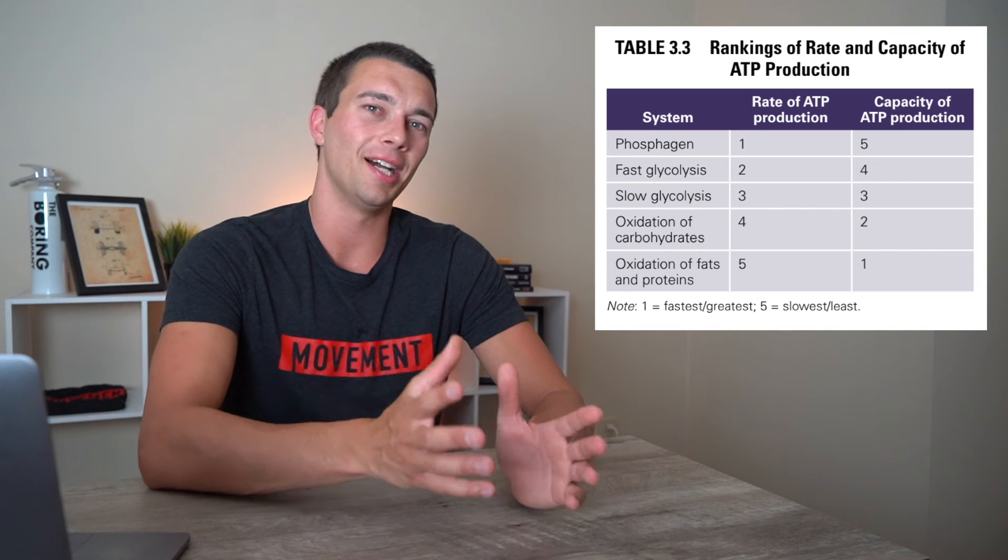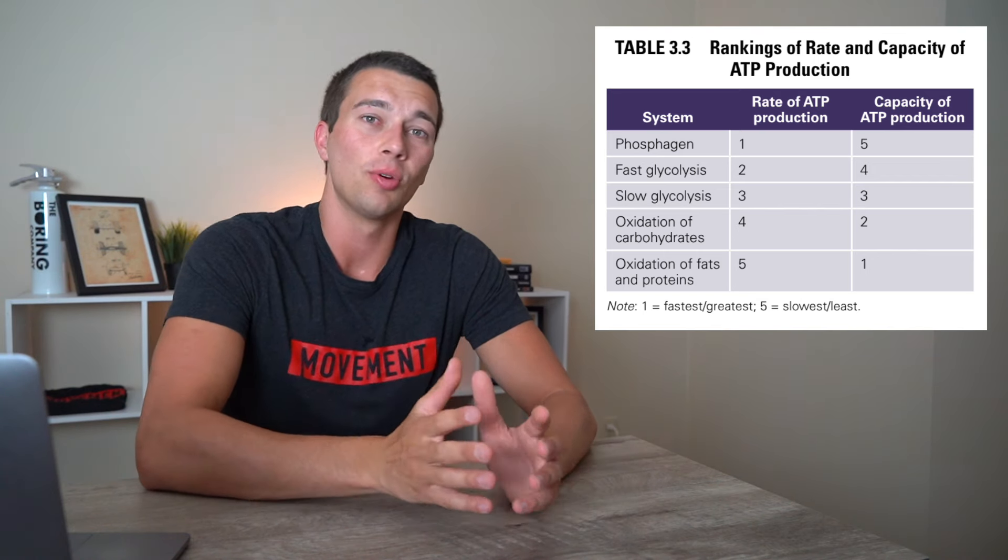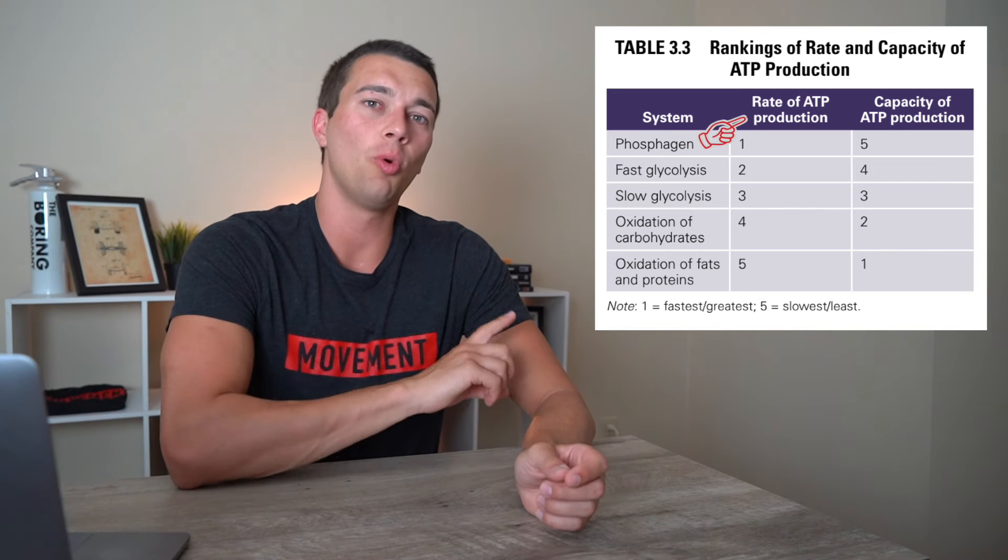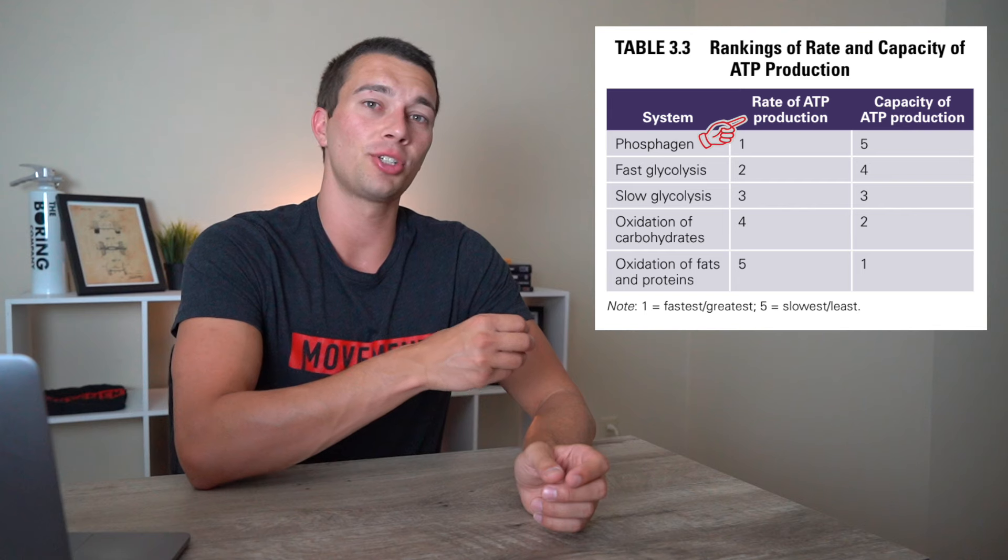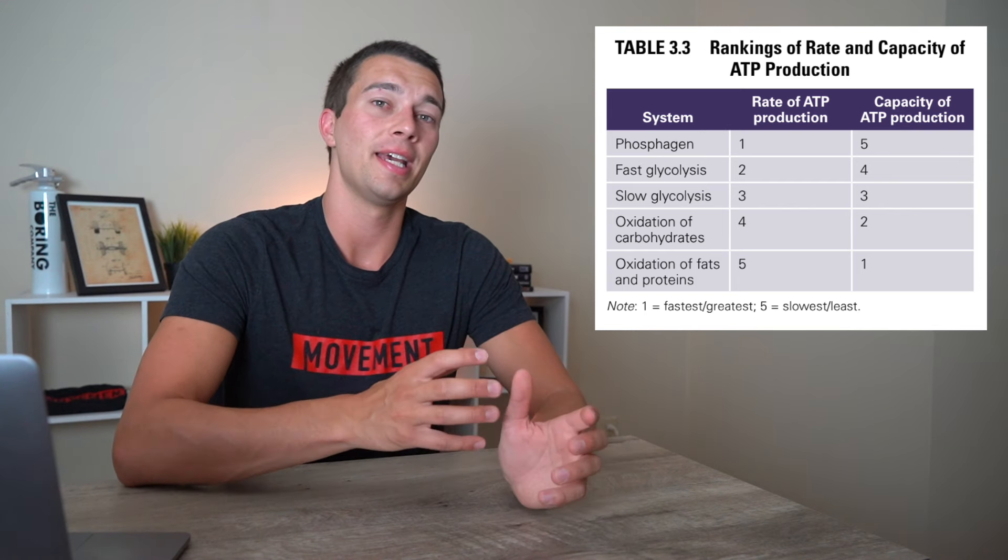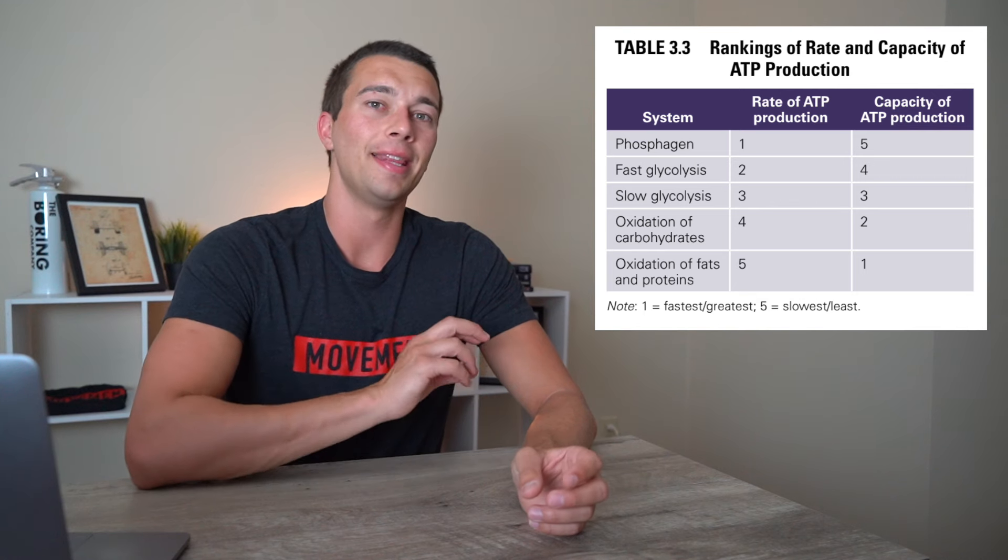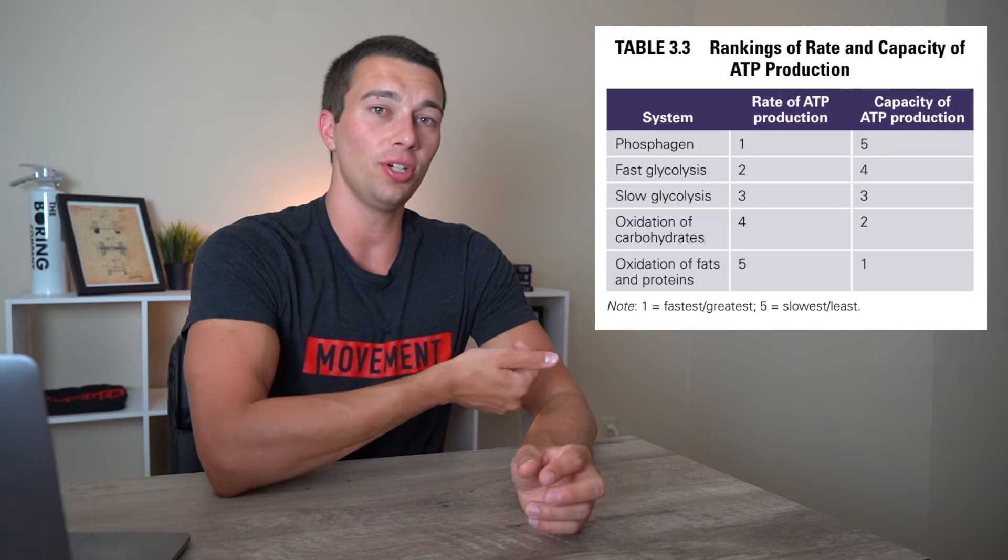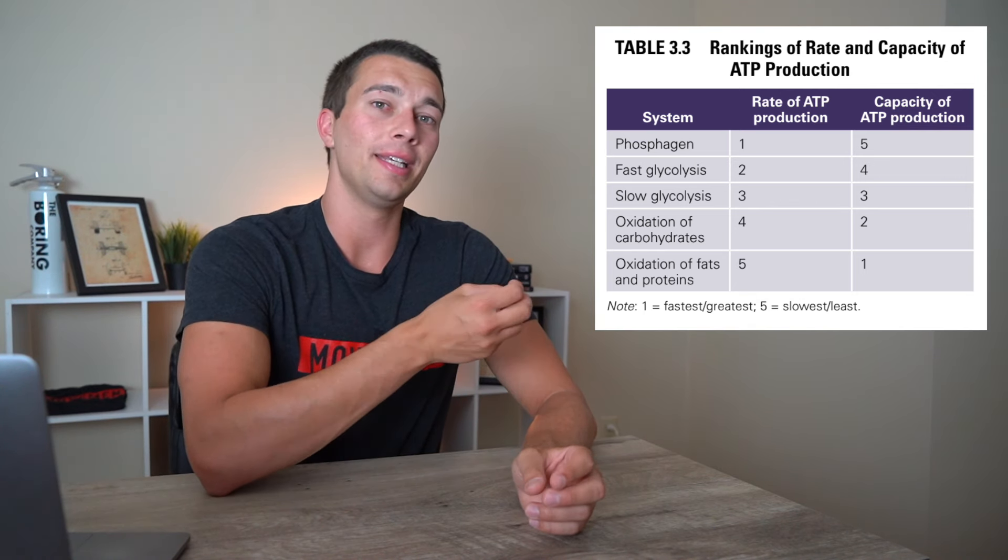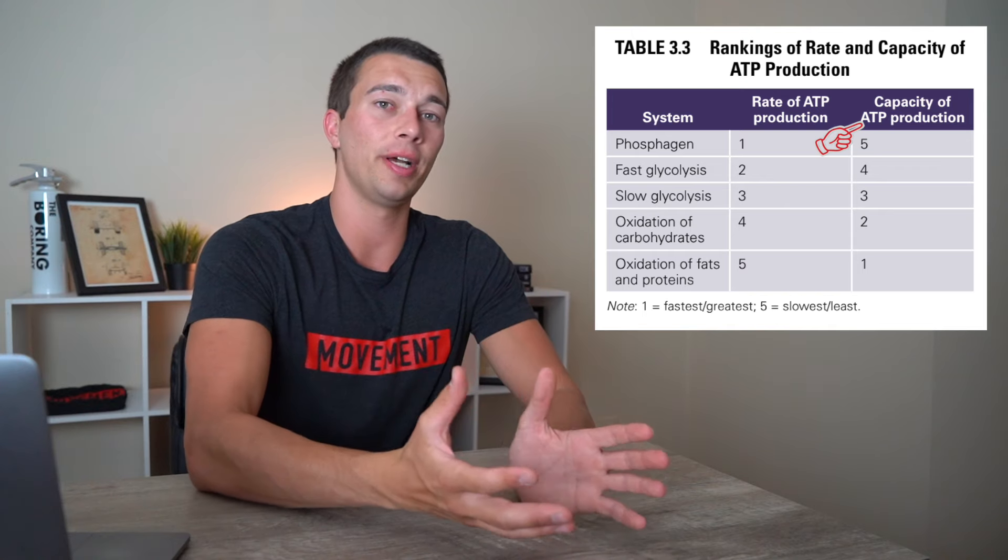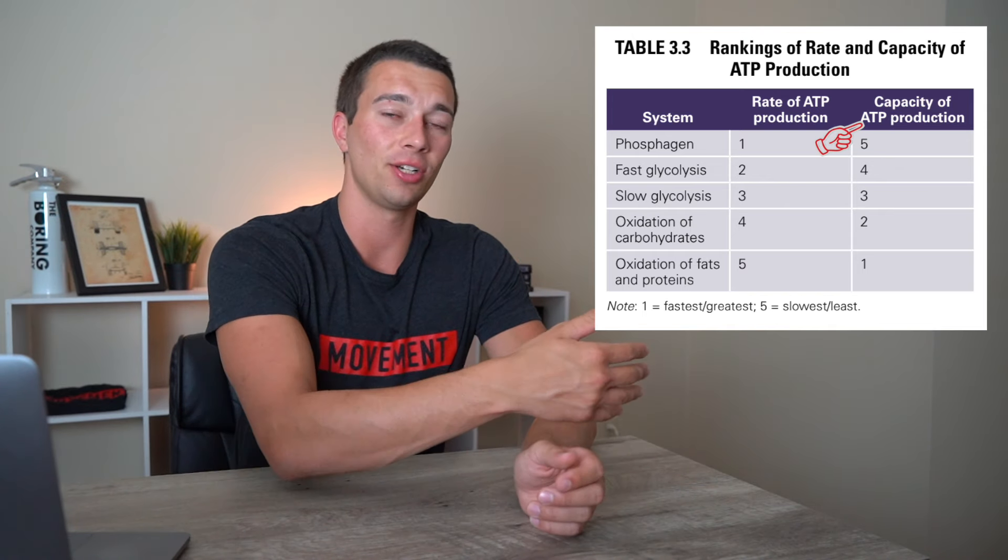Importantly, this chart isn't showing us the number of ATP that are produced. Rather, this chart is showing us in column one the rate of ATP production from one system to the next, basically which system is the fastest all the way down to which system is the slowest. And then exactly inverse to this, we're going to see the capacity for total ATP production in that second column.